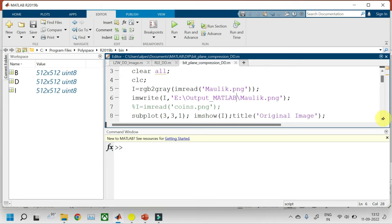So I am reading my original image and converting into grayscale image and I will be writing this grayscale image into one folder output underscore MATLAB of my E drive and you have to write this path as per your PC. So this will be my original image which will be stored in this folder by using any of the compression techniques such as Huffman coding or LZW coding.